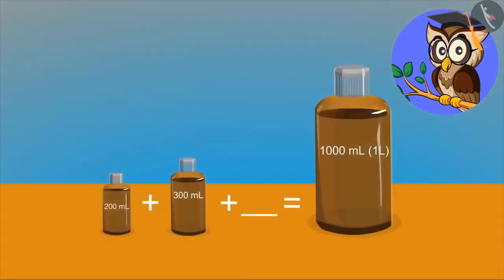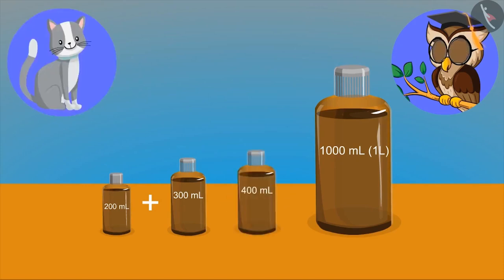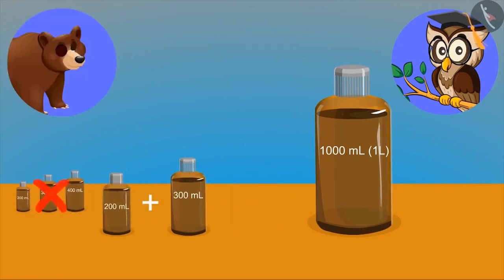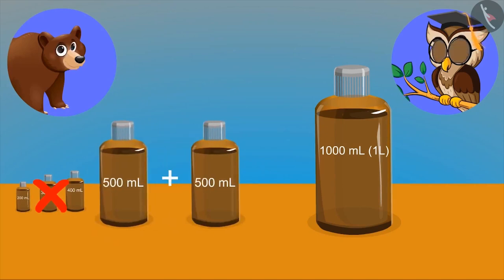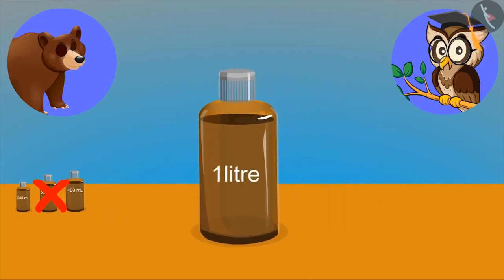Now see, in one bottle we have 200 ml of oil and in the other, we have 300 ml of oil. Now tell me, to fill a 1000 ml bottle or 1 liter bottle, how much oil will you need? Is the answer 400 ml? Look carefully. On adding, it gives 500 ml, so adding one more 500 ml will form 1 liter. Bholu, your answer is right.